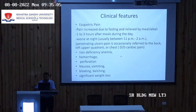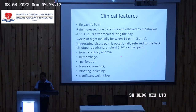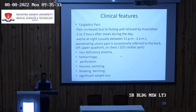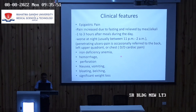Clinical features of Peptic Ulcer Disease: The main symptom is epigastric pain that increases with fasting and is relieved by meals or alkali (antacids). Pain occurs 1-3 hours after meals and is worse at night, usually between 11 PM and 2 AM. Penetrating ulcer pain may radiate to the back, left upper quadrant, or chest, potentially mimicking cardiac pain. Other features include iron deficiency anemia, hemorrhage, perforation, nausea, vomiting, bloating, belching, and significant weight loss.